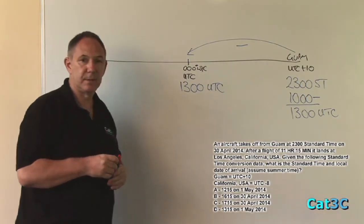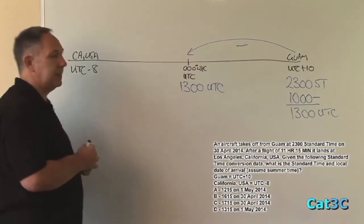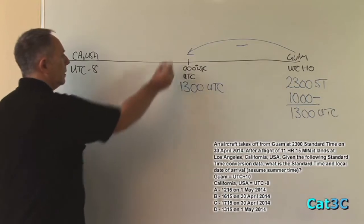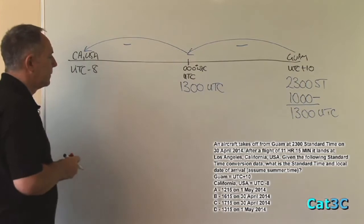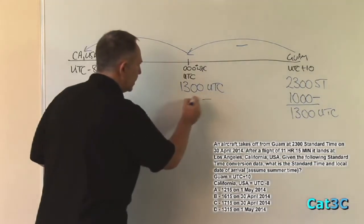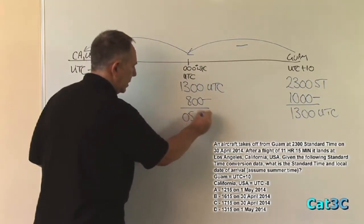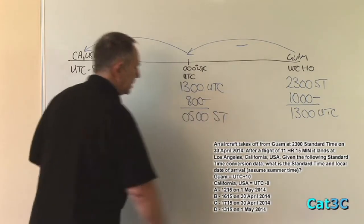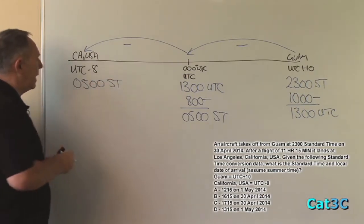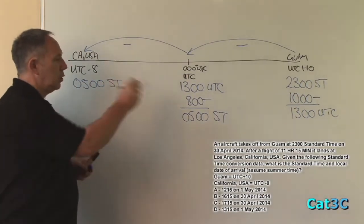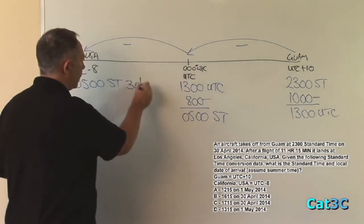The next part of the calculation is to transpose the time from UTC into standard time at California. Again, we're going from UTC to the west, so it's going to be negative. The conversion time is minus 8 hours. 1300 minus 8 gives me 0500 hours standard time. Transpose that across to California, USA, and we have 0500 hours standard time. Notice that the date has not changed at all, so we're still on the 30th of April.